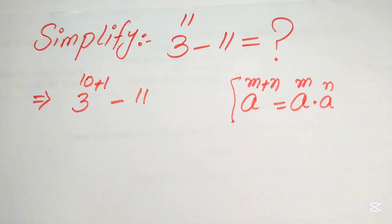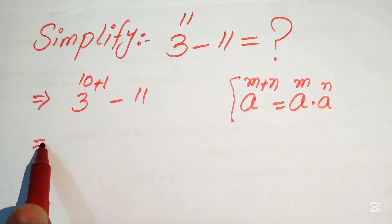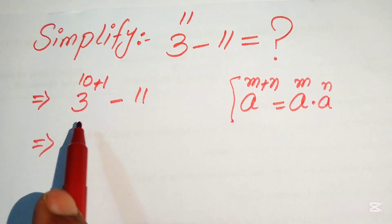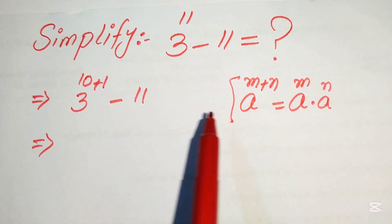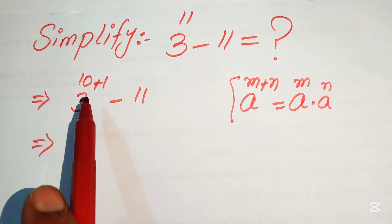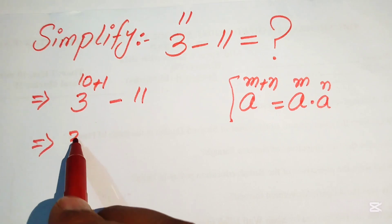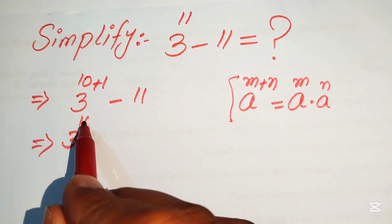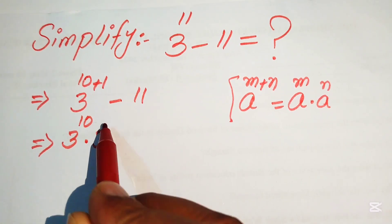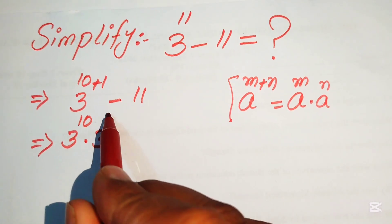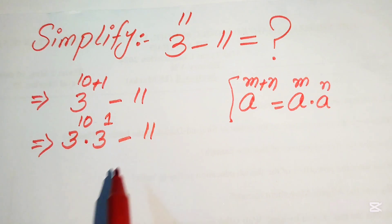According to this rule, we break the exponents and write this as 3 to the power of 10 multiplied by 3 to the power of 1, minus 11.